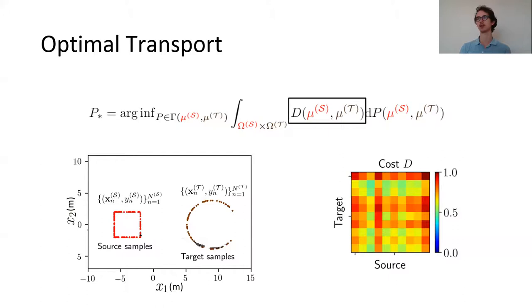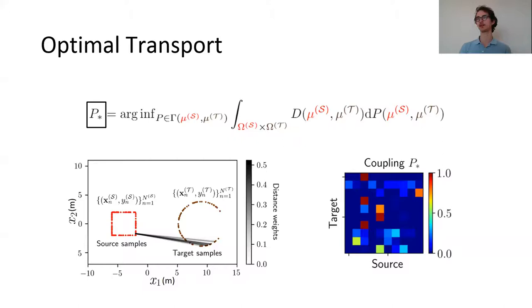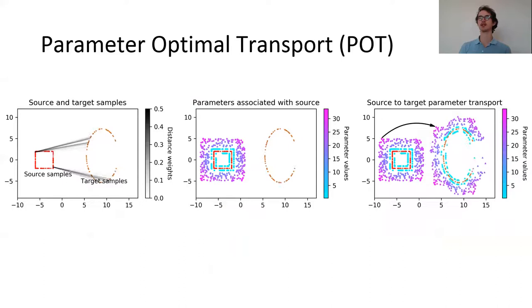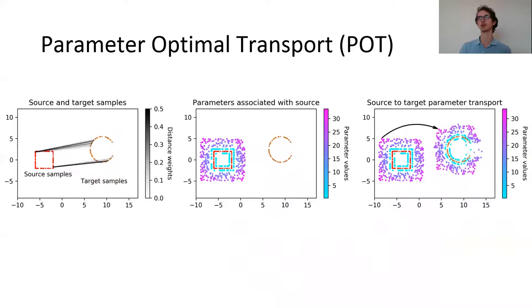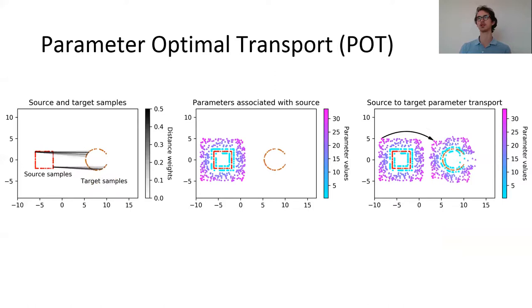And secondly the coupling matrix P star. This coupling matrix ultimately tells us how to transport from the source to the target in the most efficient way. This animation demonstrates the interplay between the solution of the coupling matrix and the geometric coupling with the parameters shown in blue and purple. We can see that the parameter transfer is robust to various deformations of the target.